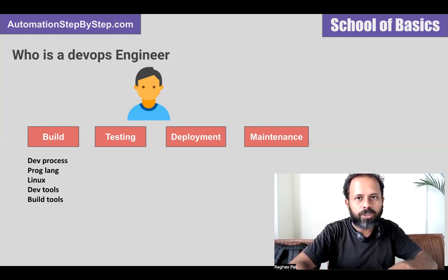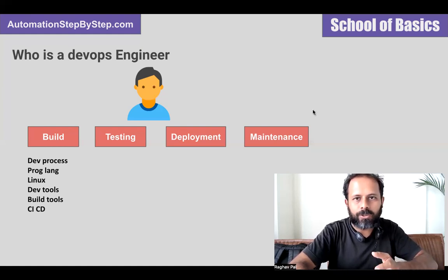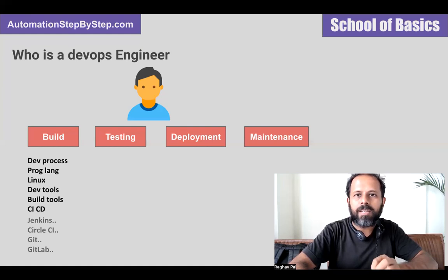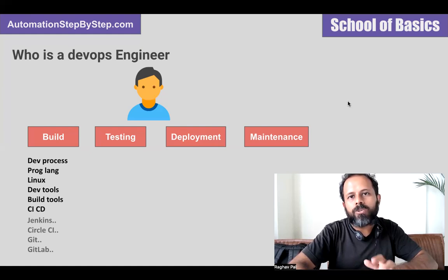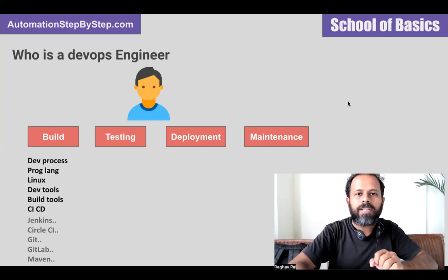He will have visibility and knowledge of all these processes and tools. In case we are using CI/CD — which is a very important part of the DevOps process — he will have knowledge of that CI/CD platform or tool. That can be tools like Jenkins or CircleCI, build tools like Maven or Gradle, configuration management tools, SCM tools like Git, and CI/CD platforms like GitLab. A DevOps person will have knowledge of all these tools used in the coding or build stage.